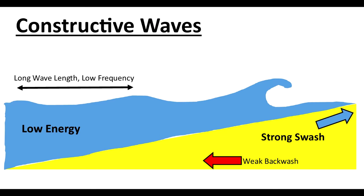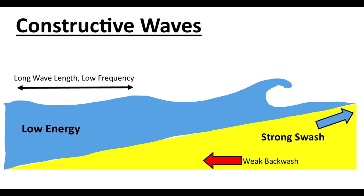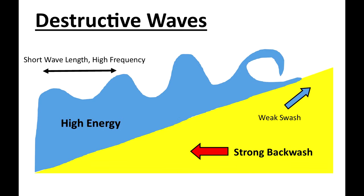It's also important to know the differences between a constructive and a destructive wave. Constructive waves have a longer wavelength and a more powerful swash, which constructs the beaches, deposits more material, and produces a gently sloping beach. When we compare that to a destructive wave we see shorter wavelengths, a more powerful backwash, which takes sediment away from the beach, transporting material away, and we tend to see steep beaches.